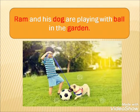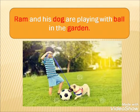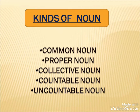Now, look at the sentence: 'Ram and his dog are playing with a ball in the garden.' In this sentence, Ram is a name of a person. Dog is a name of an animal. Ball is a name of a thing. And garden is a name of a place. So, there are kinds of Noun.